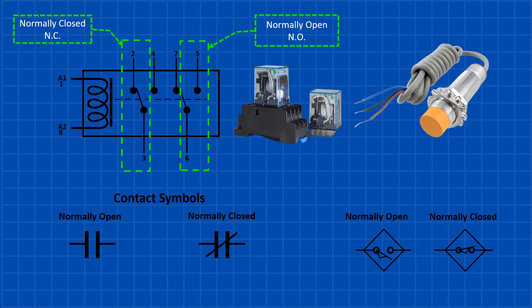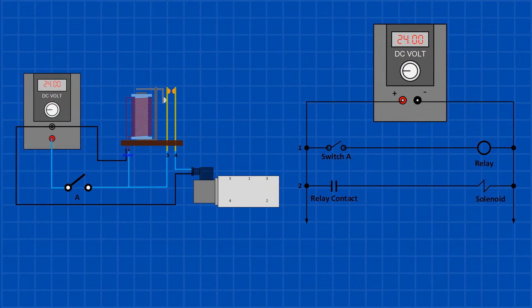Now that we know how relays work, let me show you the electrical schematic for this circuit, called a ladder diagram. It's a simple way to represent an electrical circuit and it's called a ladder diagram because it looks like a ladder. In the first line, when the switch closes it powers the relay. Then in the second line, the relay's closed contact activates the solenoid valve. You can download the list of electrical symbols from the link in the description.